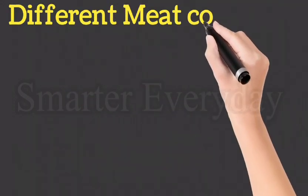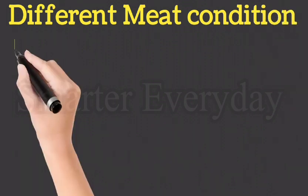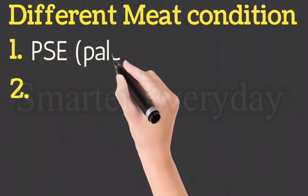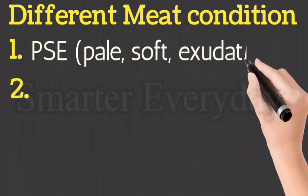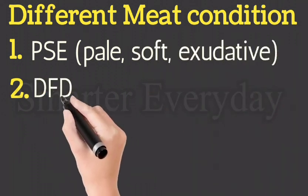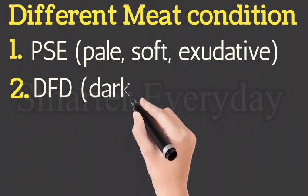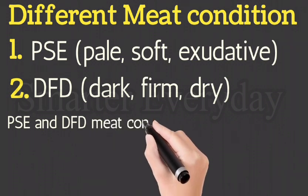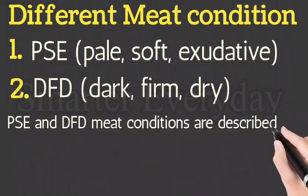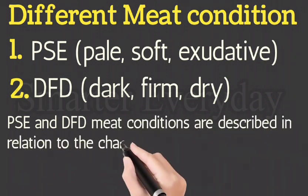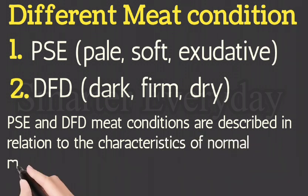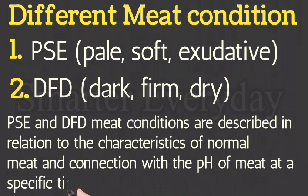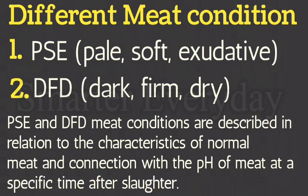Different meat conditions: 1. PSE — Pale, Soft, Exudative. 2. DFD — Dark, Firm, Dry. PSE and DFD meat conditions are described in relation to the characteristics of normal meat and in connection with the pH of meat at a specific time after slaughter.